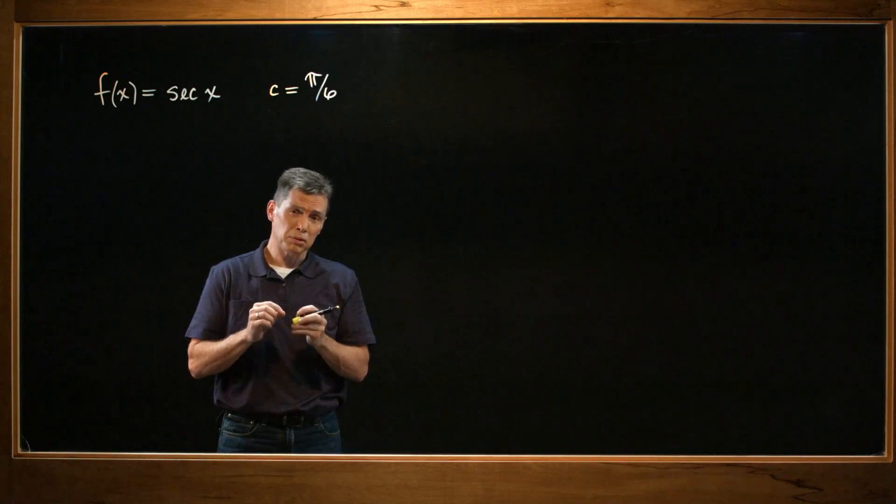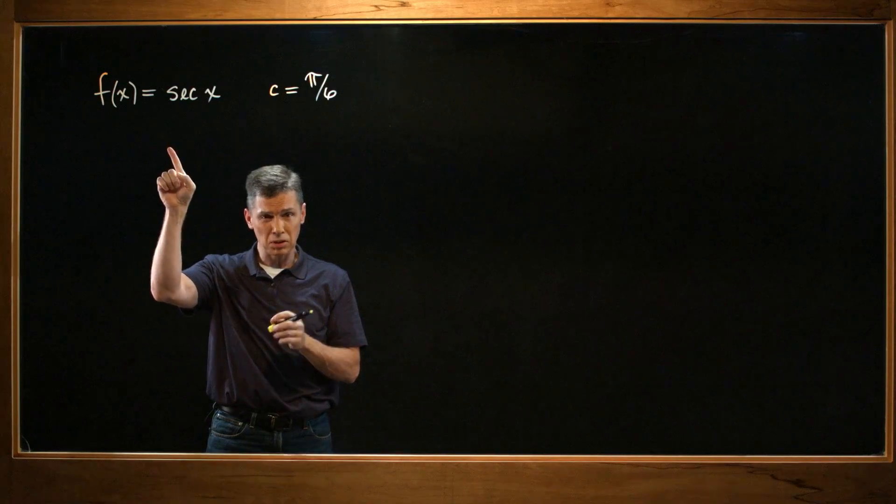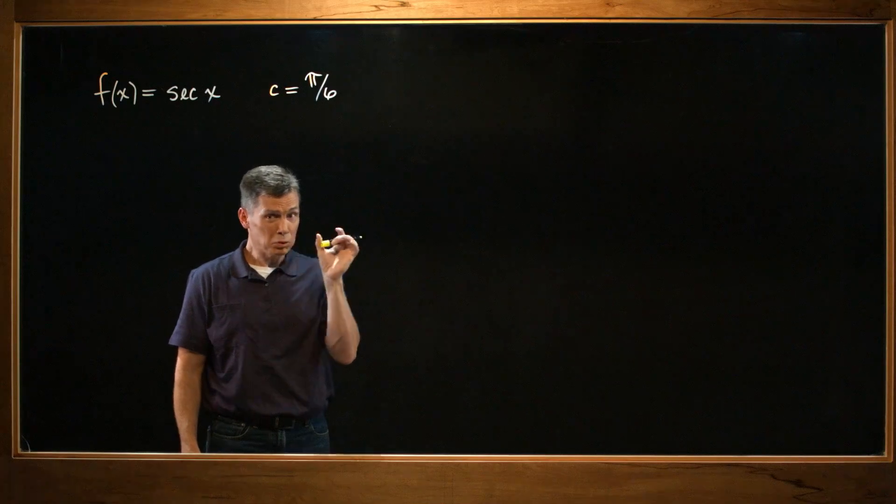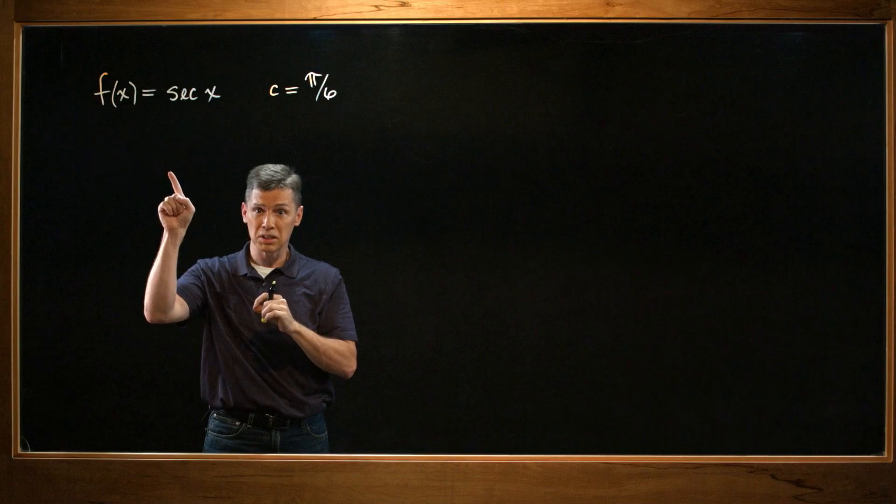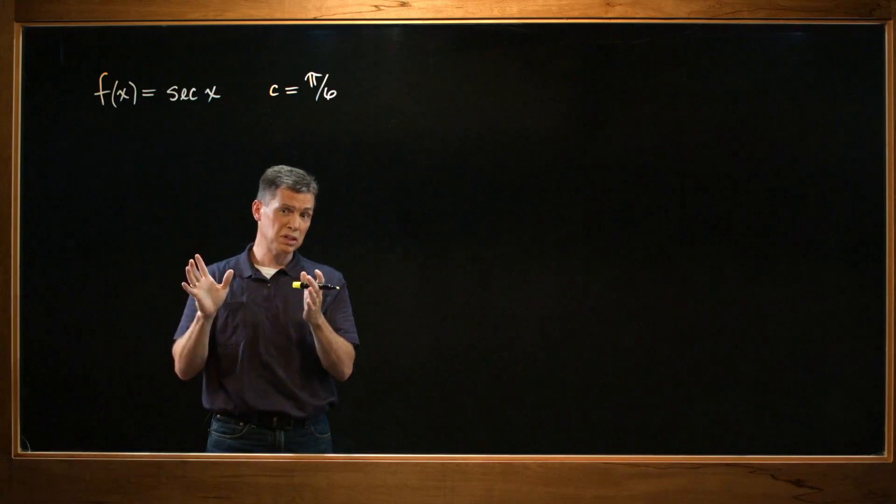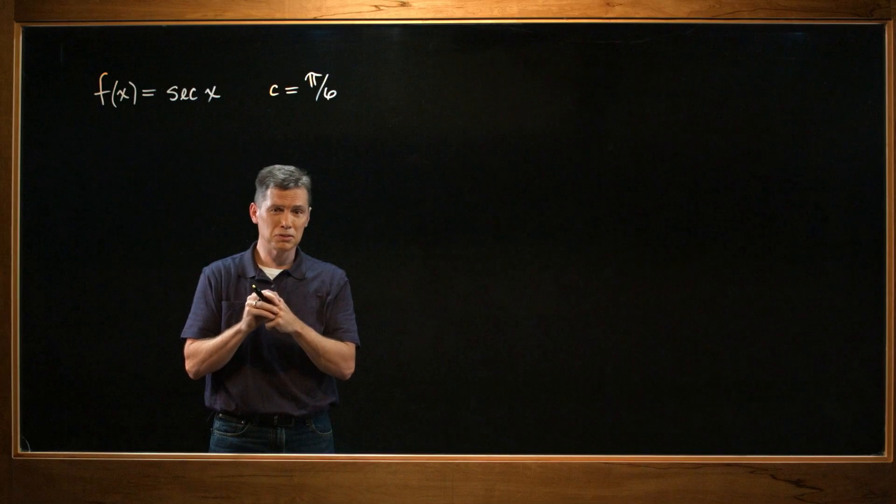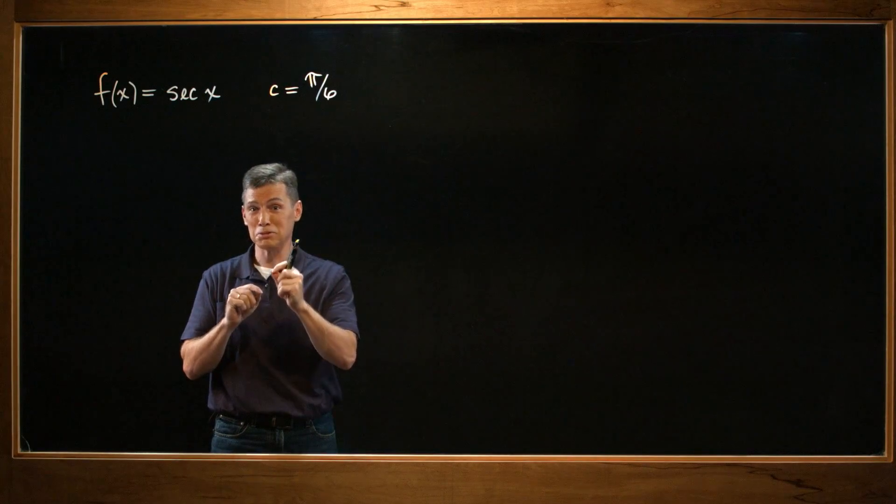They ask us to come up with a first degree polynomial that's going to have the same value of this function and also the same slope of this function at that value of c. And once we come up with that, we're asked to graph both functions, the function they give us and the function we come up with. We'll see how they compare to each other. And the final question they ask us is, what is this polynomial called? I'll try to get to that at the very end.